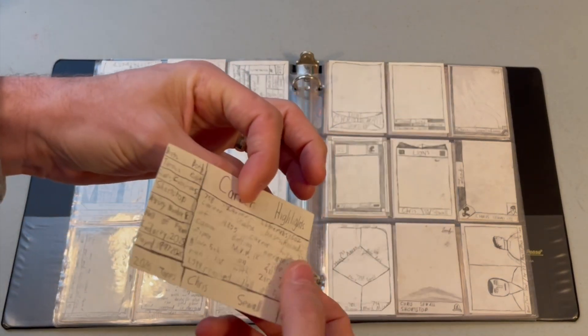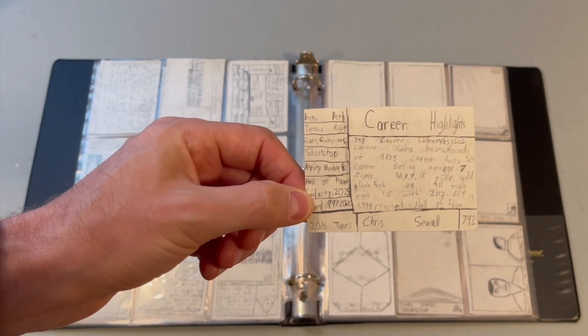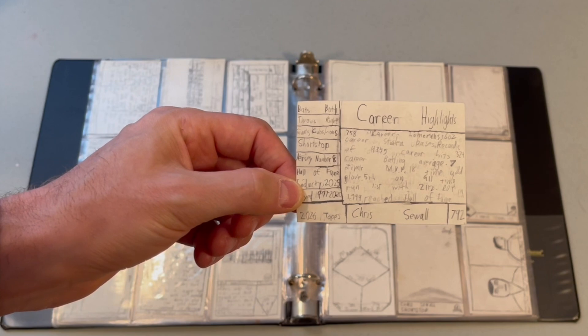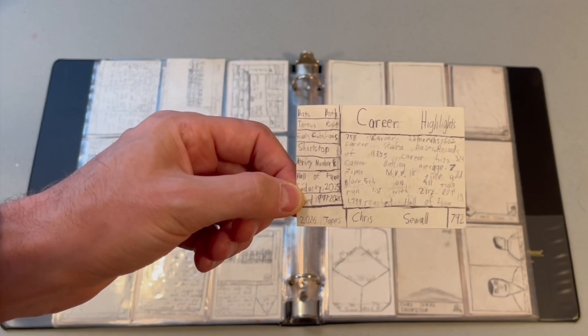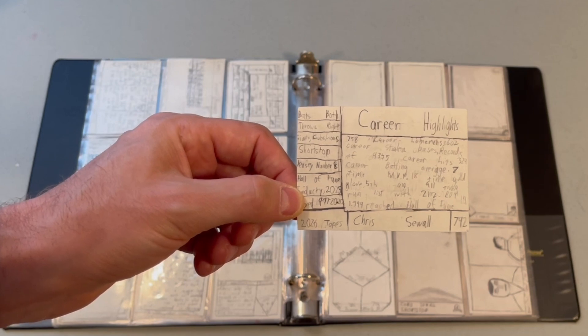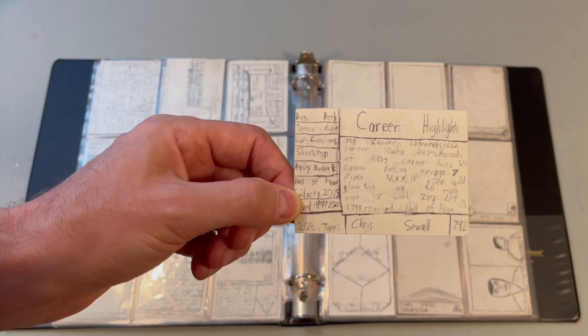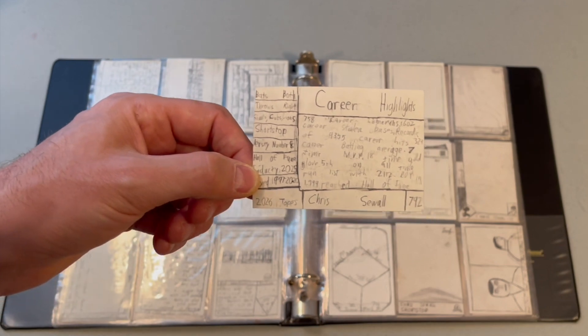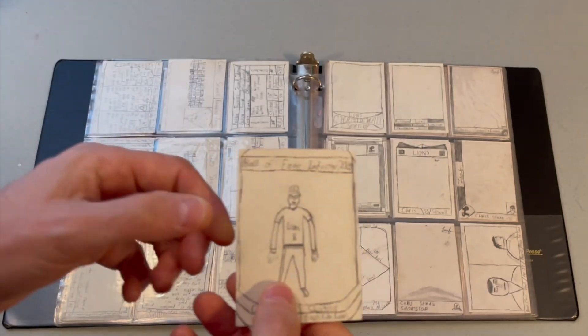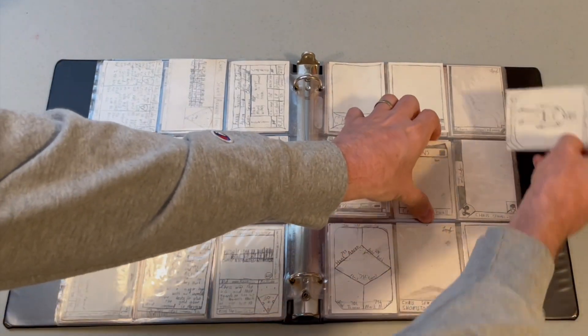Yeah, I had quite the career. Some of the highlights listed on the back include 758 career home runs—that's an all-time record. 602 career stolen bases, making me the only 600-600 player in history. 4,355 hits, that's number one all-time. Just a .324 career batting average—felt like that should have been higher. But seven MVPs, 18-time gold glove winner, fifth all-time in runs scored, and lots of other great accomplishments by yours truly.